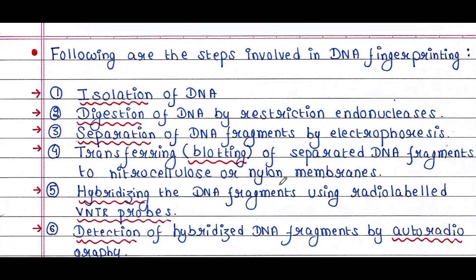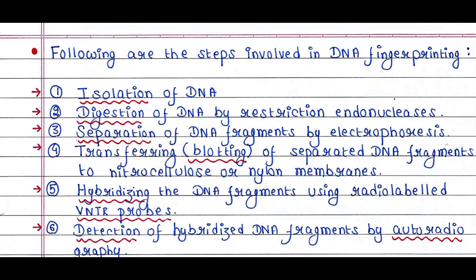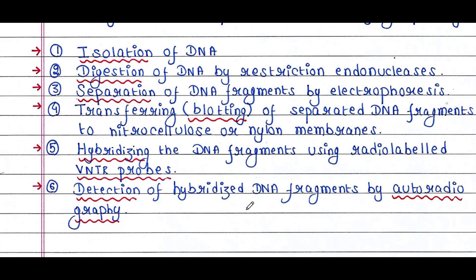Next, the DNA fragments are hybridized using radiolabeled VNTR probes. These probes are complementary to the DNA fragments and hence bind to them. Since the probes are radiolabeled, the final step is detection of the hybridized DNA fragments by autoradiography, which allows you to visualize the DNA fragments.